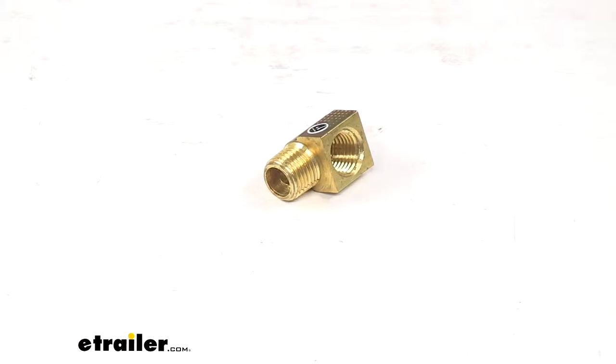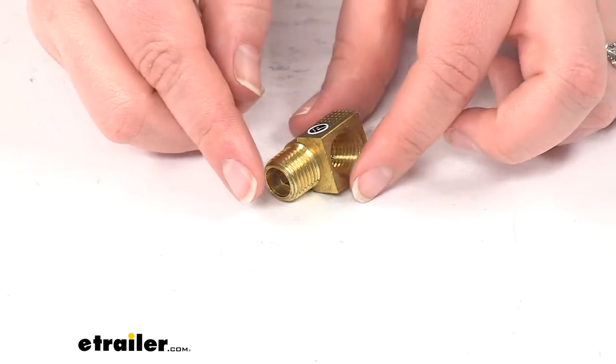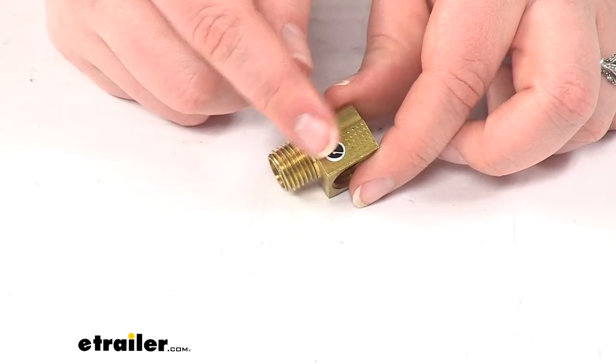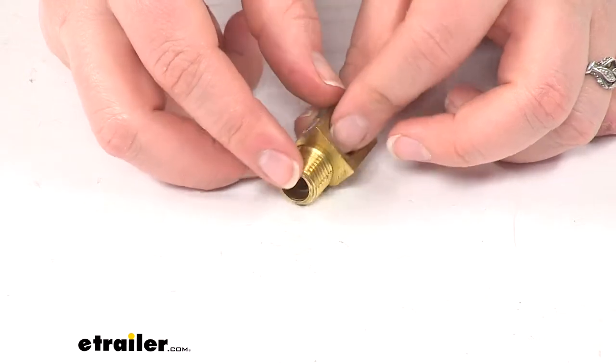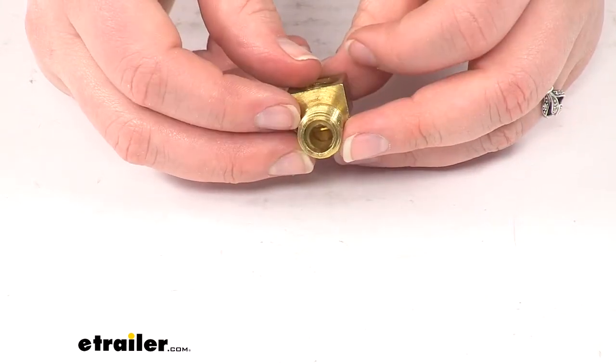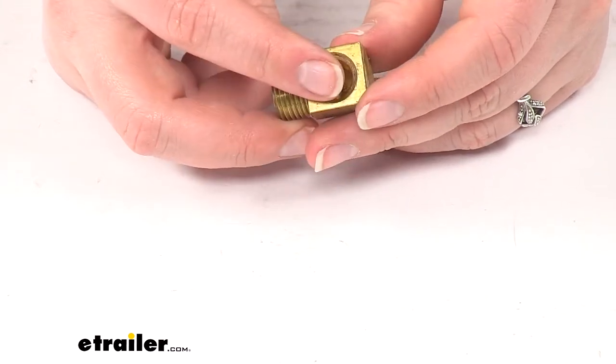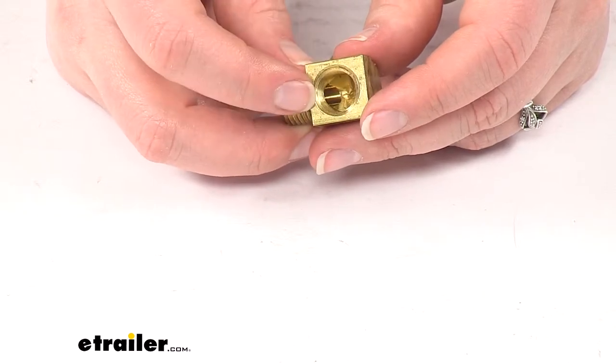Today we're going to take a quick look at the replacement brass bar street elbow for Fisher snow plow. This is a ninety degree fitting with a quarter inch opening on one side that opens up to about a half inch fitting.